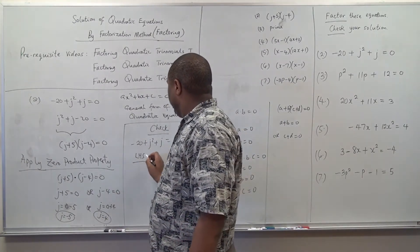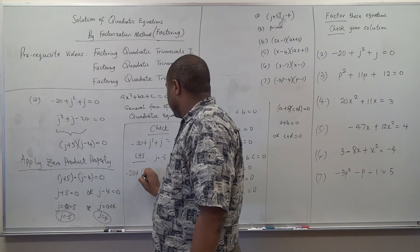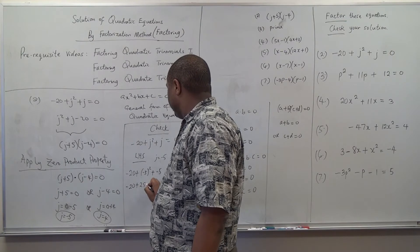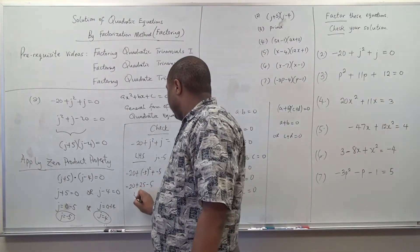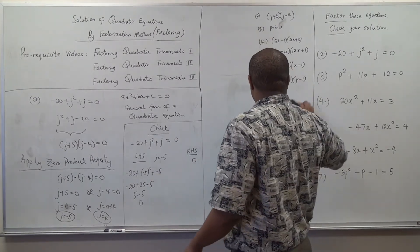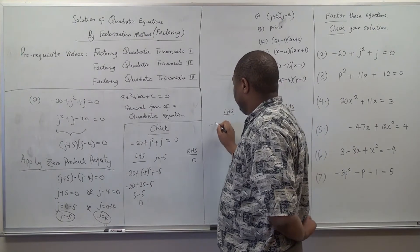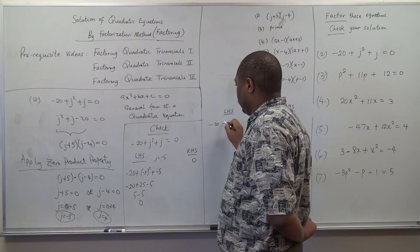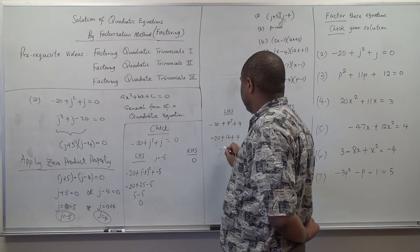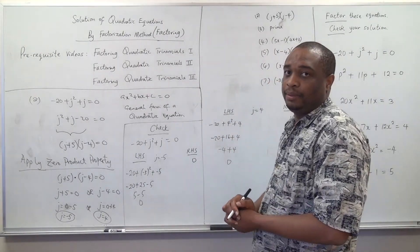Whatever we get on the left-hand side must equal the right-hand side. For J equal to negative five: negative 20 plus negative five all squared plus negative five. That is negative 20 plus 25 minus five, which is five minus five, and that's zero. Zero equals zero — confirmed. Then we check for J equal to four: negative 20 plus four squared plus four. That is negative 20 plus 16 plus four, which is negative four plus four, and that's zero. Zero equals zero — confirmed. We are done with number two.